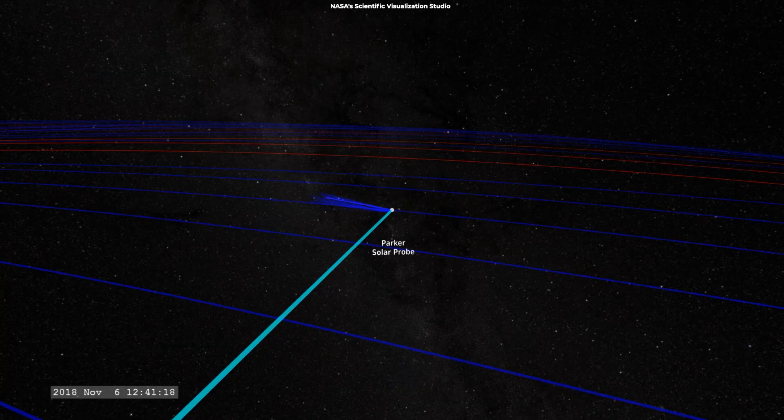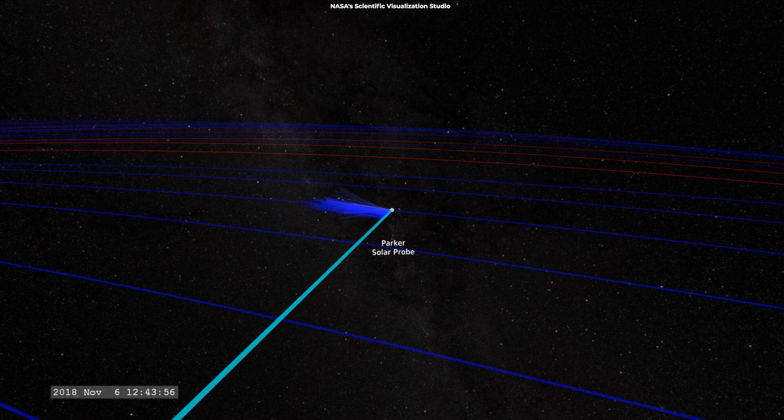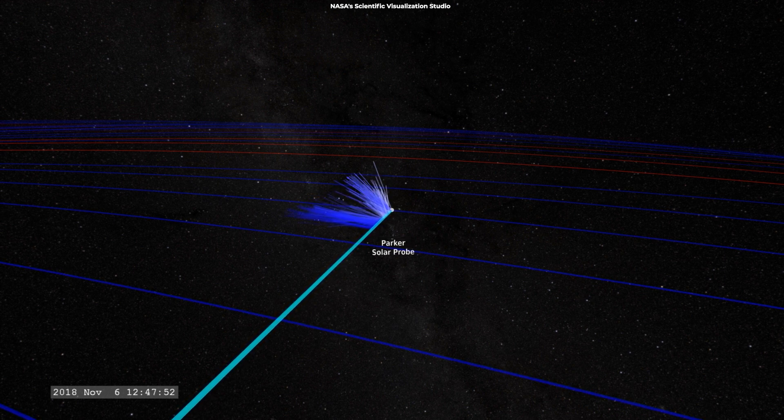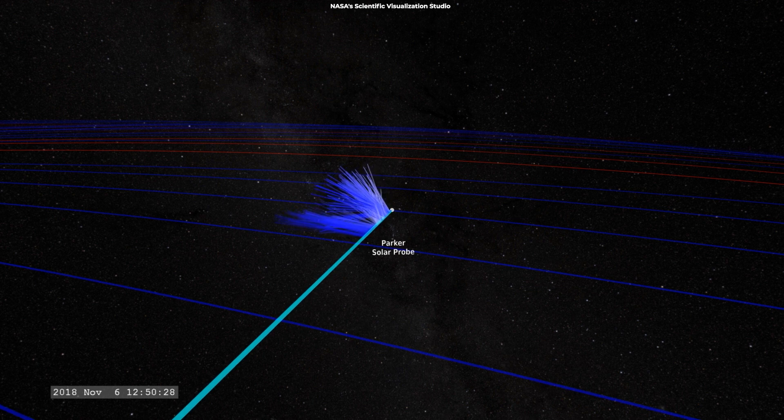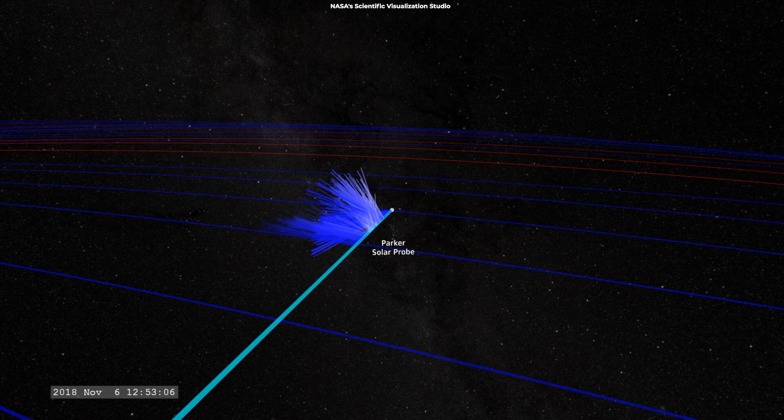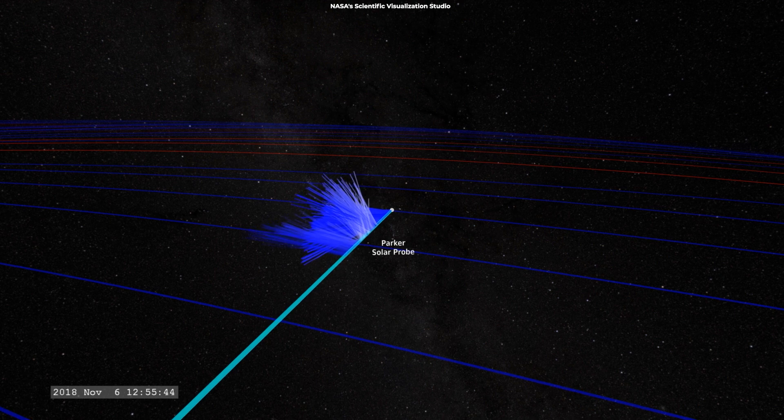The structure of the switchback regions corresponds to a small magnetic funnel structure at the base of the corona. Some theories predict this, and this identifies a source for the solar wind itself.